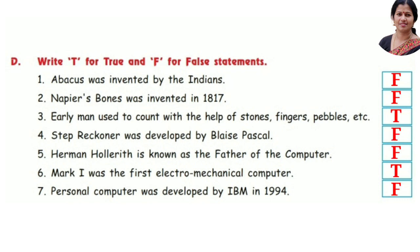Now write T for true and F for false statements. Number one: Abacus was invented by the Indians — False; it was invented by the Chinese. Number two: Napier's Bones was invented in 1817 — False. Number three: early man used to count with the help of stones, fingers, pebbles, etc. — True.